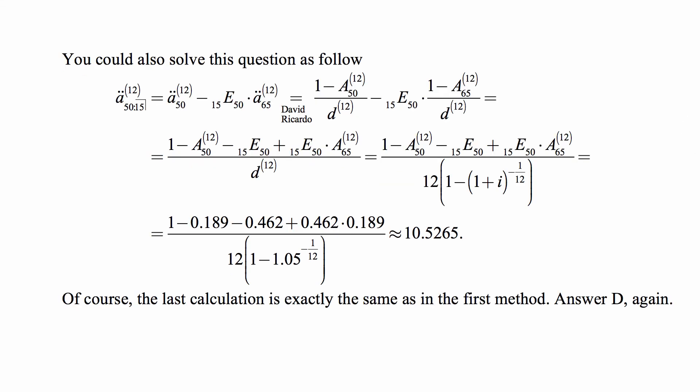Now, let me show you that you could do this also in a different way by taking that temporary life annuity at age 50 but only over 15 years as life annuity at age 50 minus deferred by 15 years annuity at age 65 subtracted. And in this way you don't have to add that pure endowment factor.